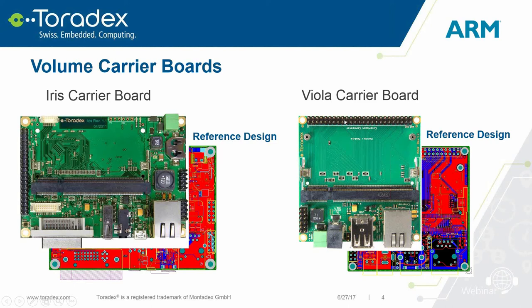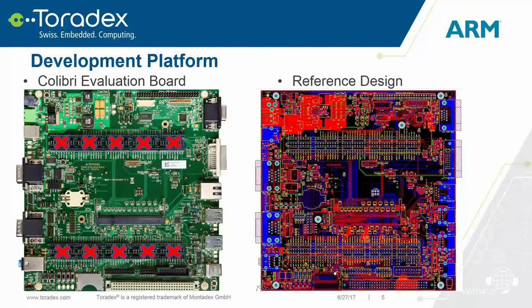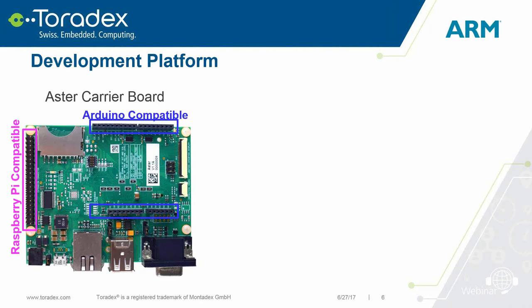If you want to start with Toradex and are looking for something more focused on development, we also have the Colibri Evaluation Board — a very complete carrier board where you can open and change most parts of the circuit. Some months ago, we also released the new Aster Carrier Board, which is a great platform to start developing with Toradex. The Aster has a connector compatible with the Raspberry Pi header and another that allows you to connect Arduino shields.